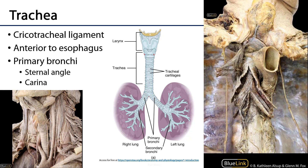Right at that bifurcation inwardly we have the carina. Carina means keel, as in the keel of a ship. Here we can see this open up with the right primary bronchus and the left primary bronchus, and the carina is the ridge between the two. That ridge is very richly innervated such that if anything is aspirated and comes into contact with it, it would send you into a fit of coughing and bronchospasm so as to hopefully dislodge that foreign substance.